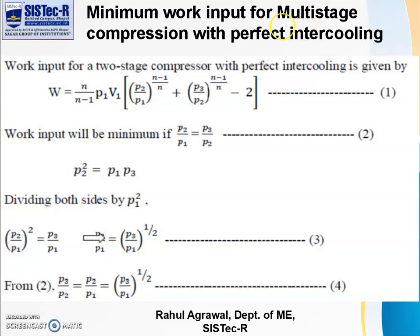The first topic is minimum work input for multistage compression with perfect intercooling. We derived this expression for two-stage compressor: W = n/(n-1) P1V1 [(P2/P1)^(n-1)/n + (P3/P2)^(n-1)/n - 2]. From this expression, P1V1 is the intake condition at atmospheric pressure and volume. P3 is the delivery pressure, which we store. P2 is the intercooler pressure, the intermediate pressure.